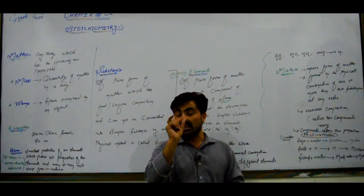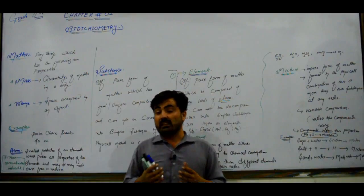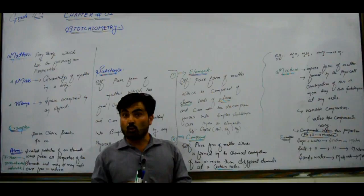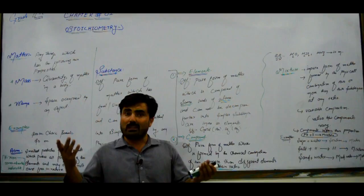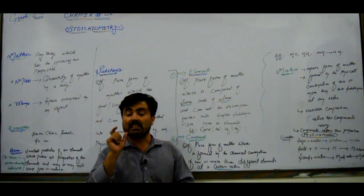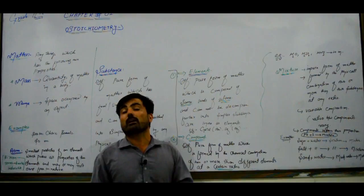Some elements do exist freely in nature — for example, the noble gases (also called inert gases or zero group elements) in the eighth group of the periodic table. These are stable elements that exist freely in nature without undergoing chemical reactions.